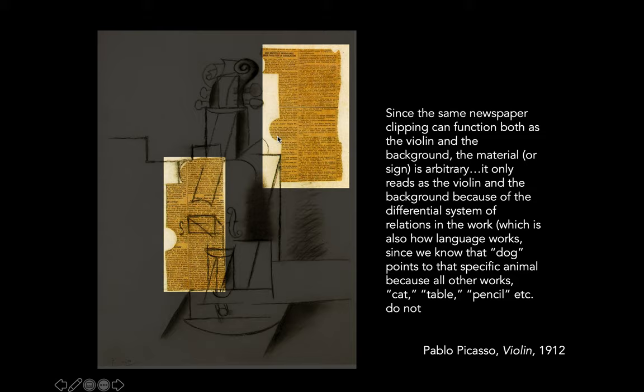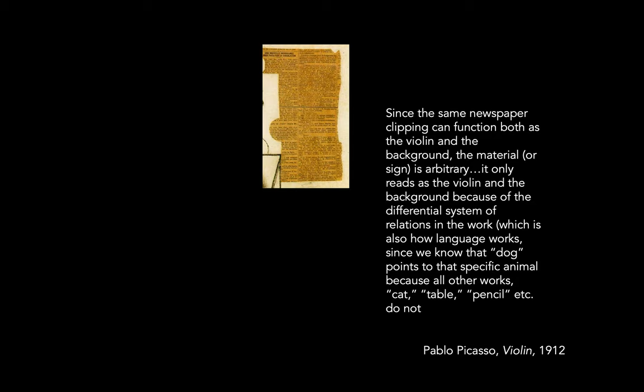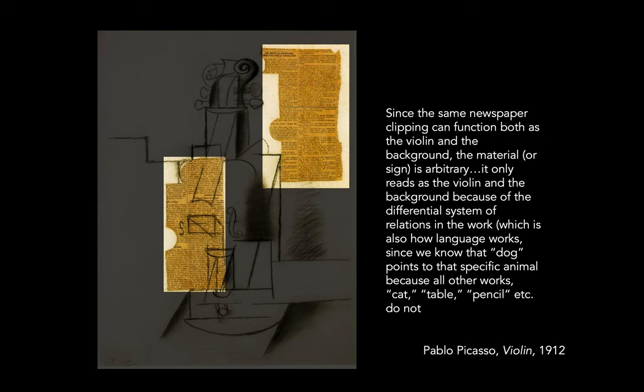And it's the same thing with this one — you would have just said: oh, this is a cutout newspaper, but it doesn't seem to be representing anything. But if you put them together, the difference between the two, along with of course the drawing that connects them, then they start to read as representative of something — namely the background, and then violin. And they only do so by negating each other.